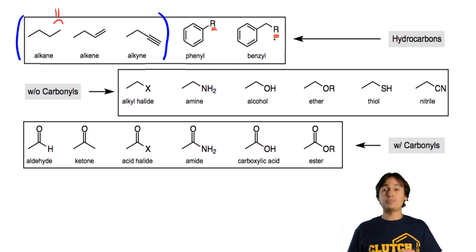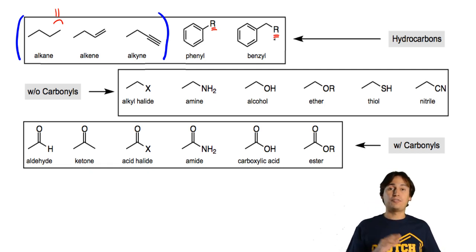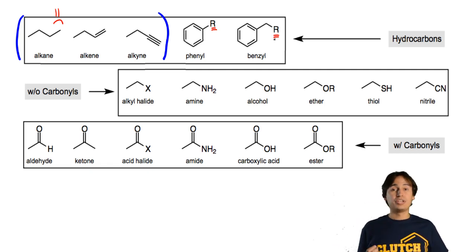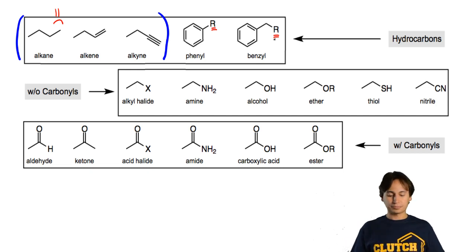If it's attached one carbon away from the main chain, that means it would be CH₂R. If it's directly attached, it's called a phenyl. If it's one carbon away, it's called a benzyl.